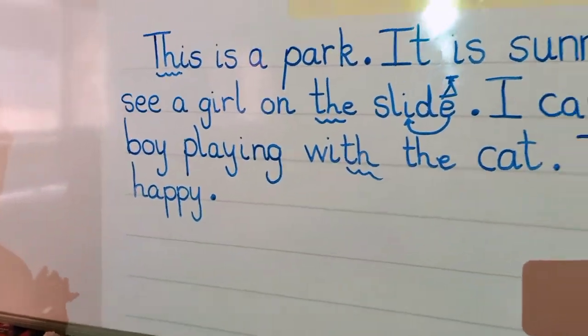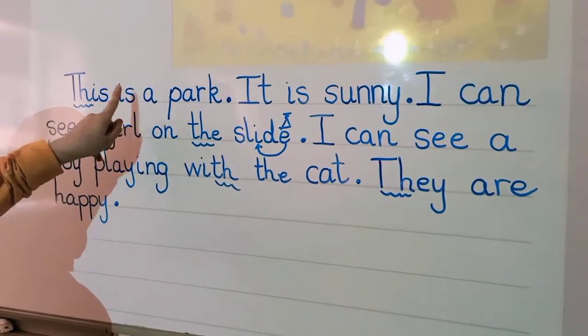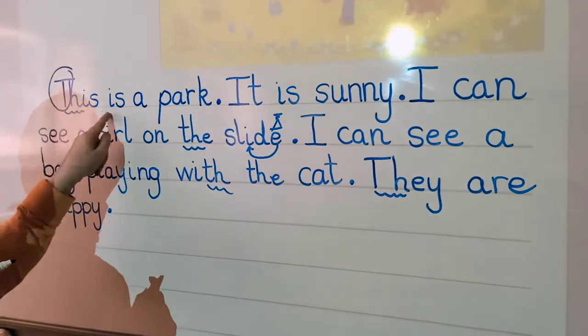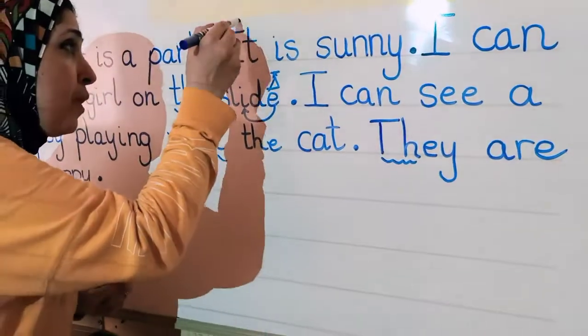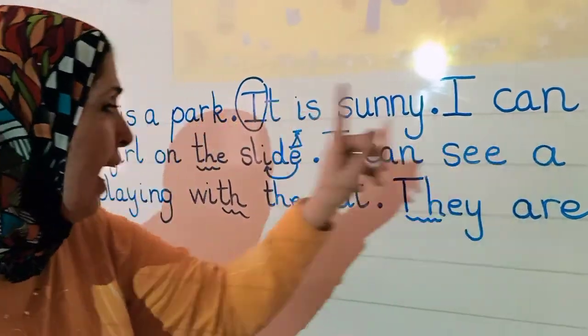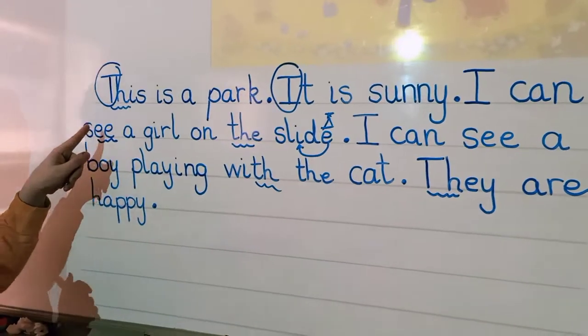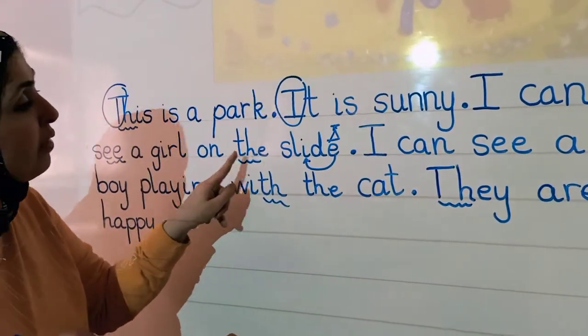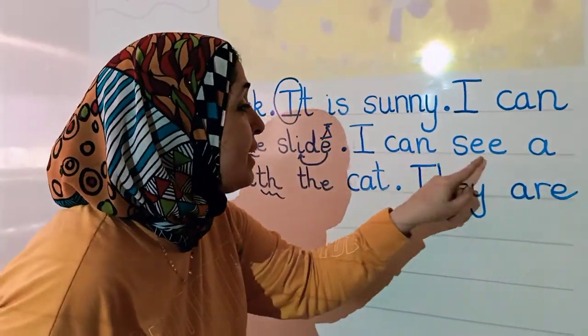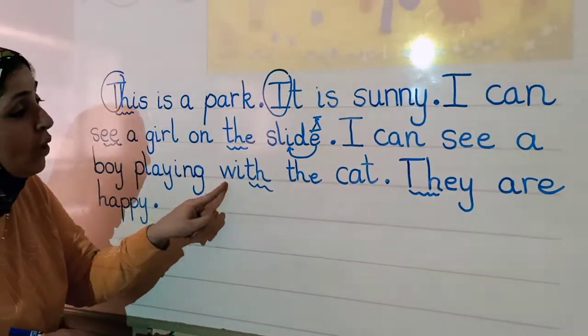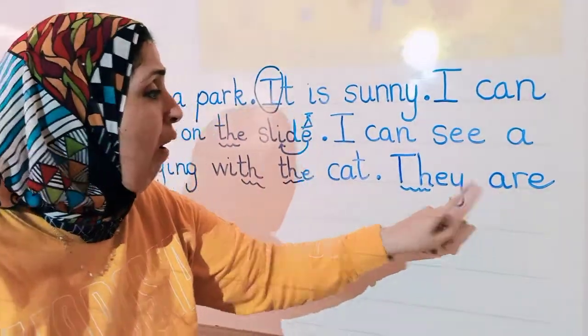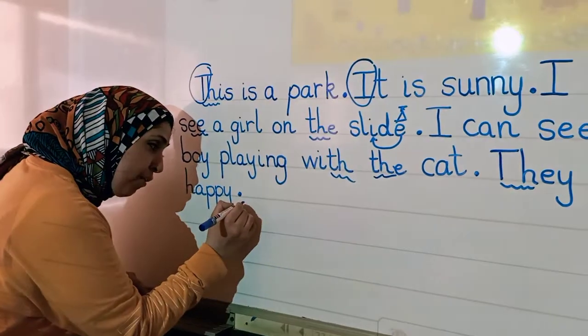Let's read all the paragraph. This is a park. Capital T because it's the first letter of the sentence. This is a park. Full stop. After the full stop, we should use a capital letter. It is sunny. Full stop. I can see, digraph E with the two E's, a girl on the slide. And this is a magical E that turned the E into I. I can see a boy playing with the cat. The, digraph T, H. They are happy. And I ended my paragraph with a full stop.